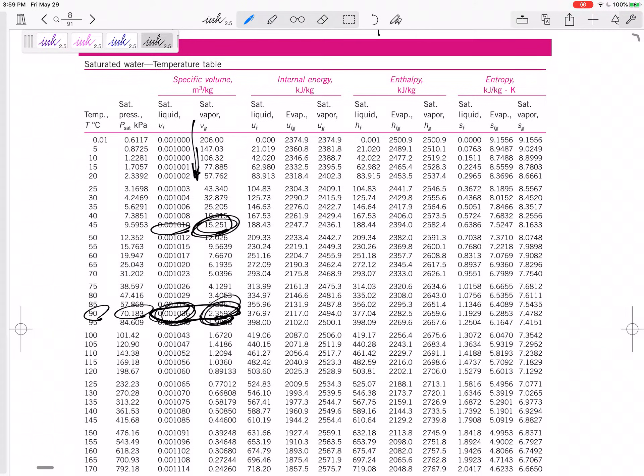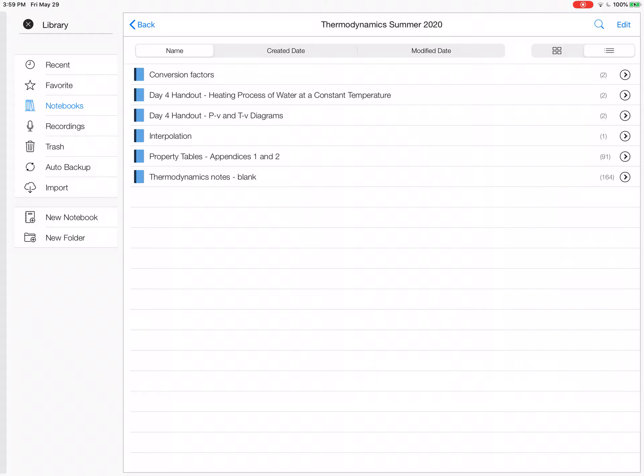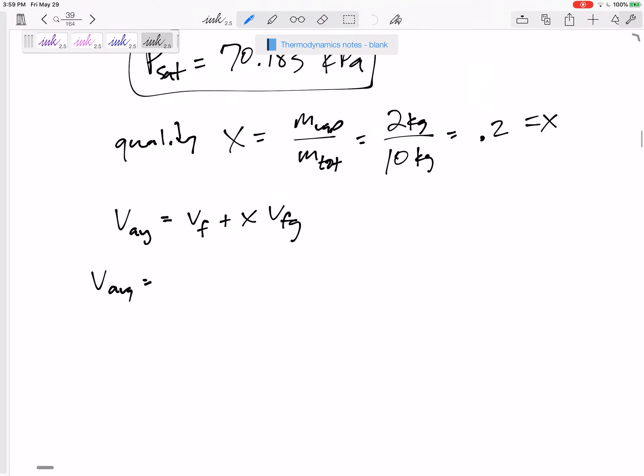So there's VF, there's VG. Let me go back to our notes. VF was 0.001036, and be careful not to accidentally leave out a zero or something. That would throw off your numbers a bit. Plus quality times VFG.